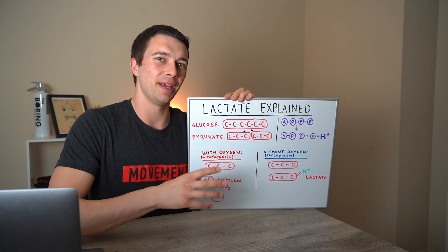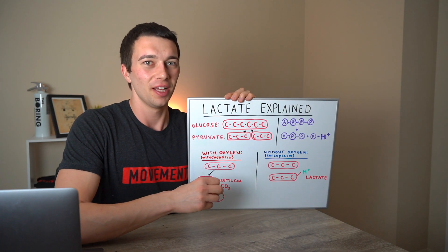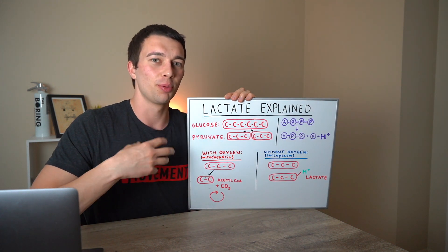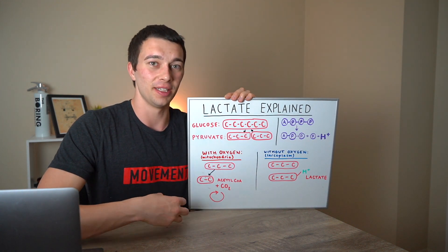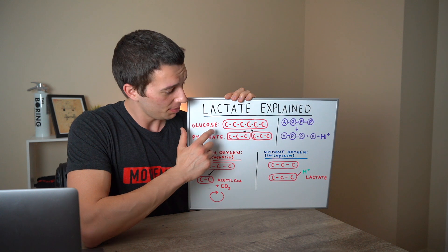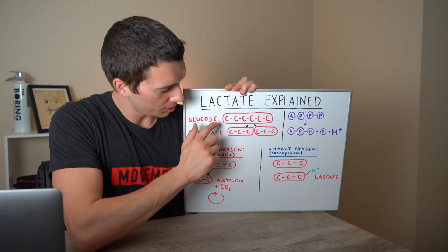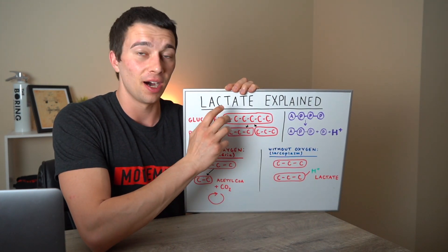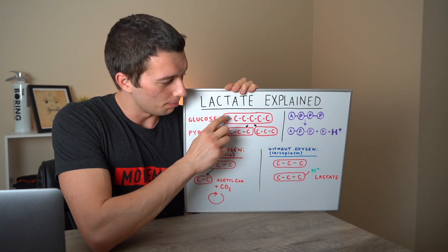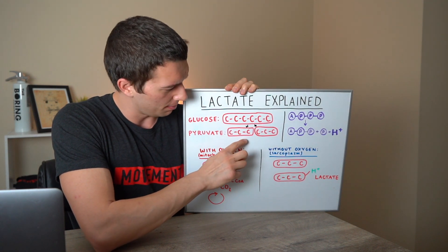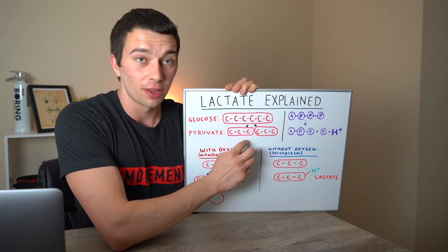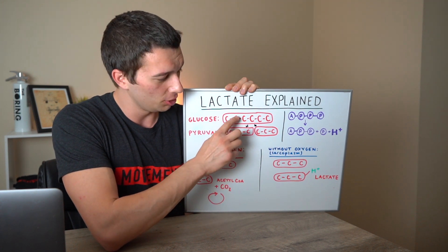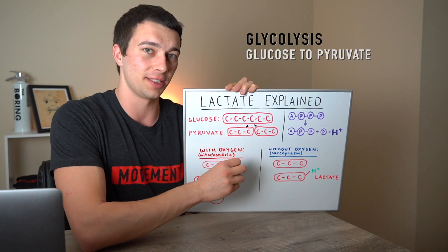Let's start with some basic metabolic physiology. If we eat a bagel or a donut and break that down through our stomach and digest it into our bloodstream, that's going to be a glucose molecule — a six-carbon molecule. That glucose molecule can break down into two three-carbon pyruvate molecules, and that process of going from glucose to pyruvate is glycolysis.